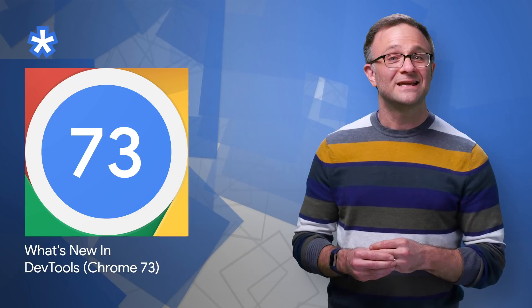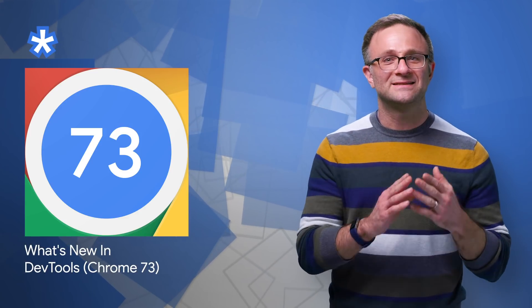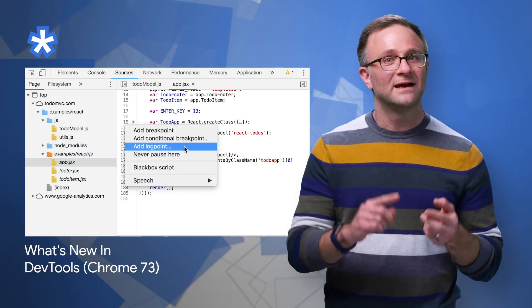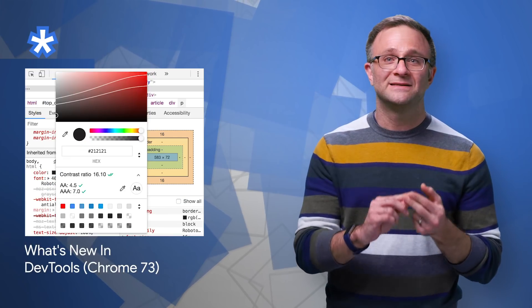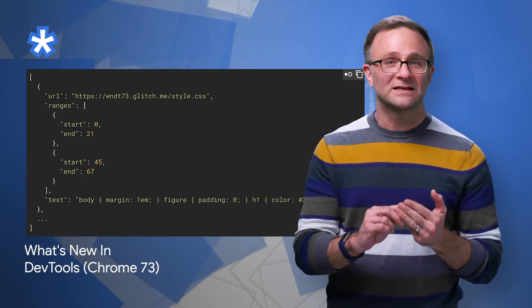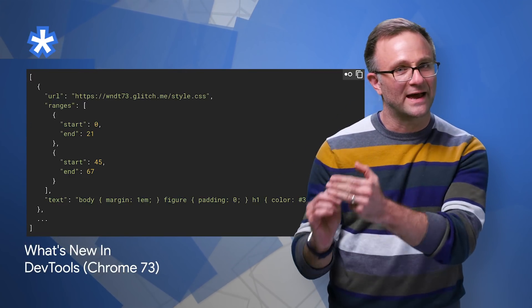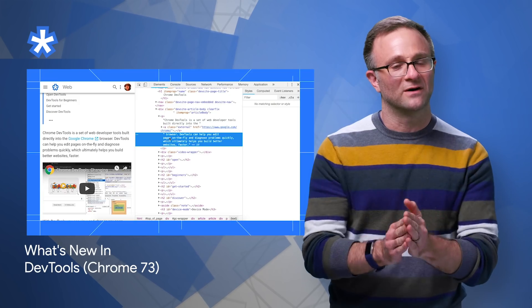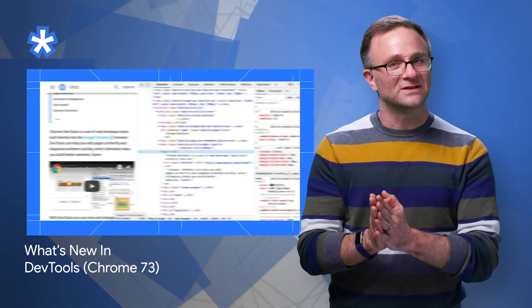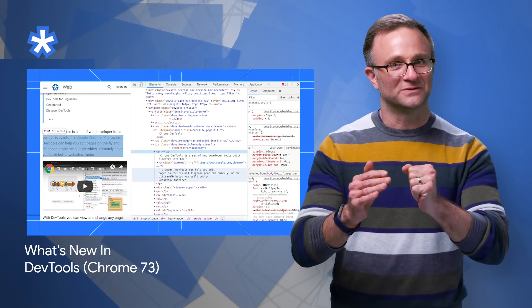Chrome 73 is available with updates to dev tools, including log points, style properties in inspect mode, the ability to export code coverage data as a JSON file, and much more. All the updates are on the post.